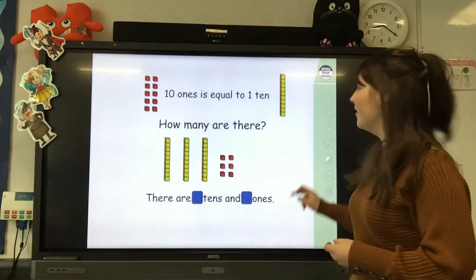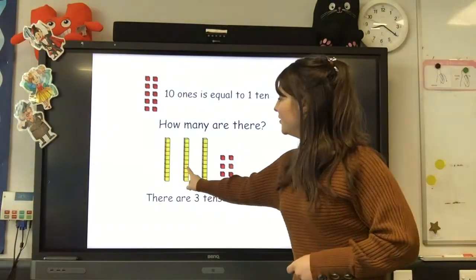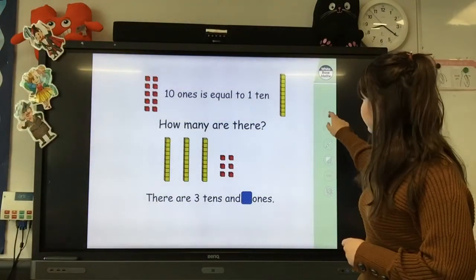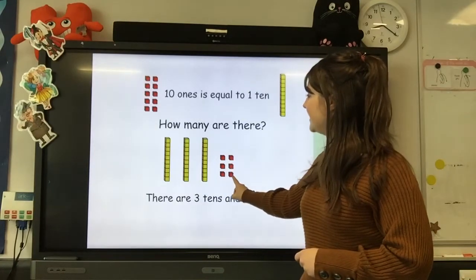There are 3 tens here. 1, 2, 3 tens. And there are 6 ones. 1, 2, 3, 4, 5, 6.